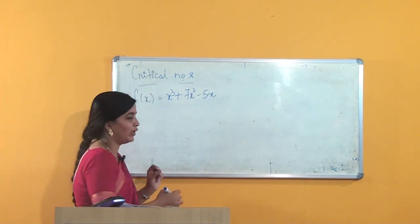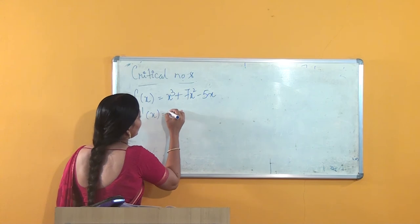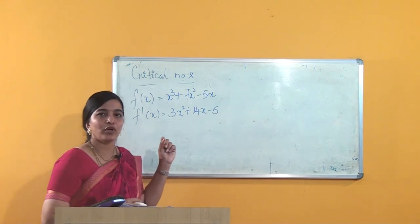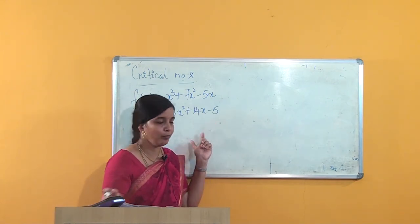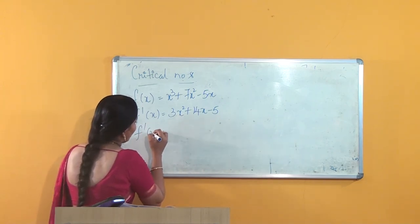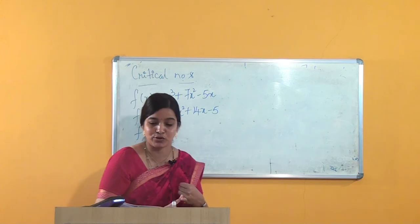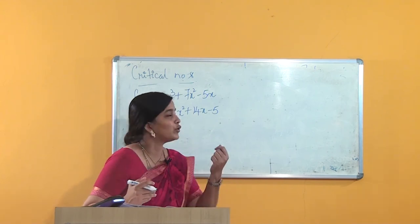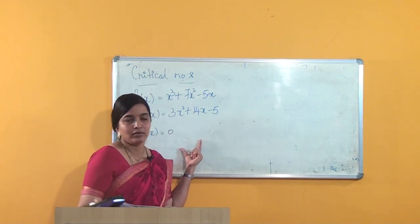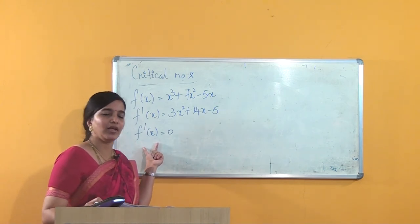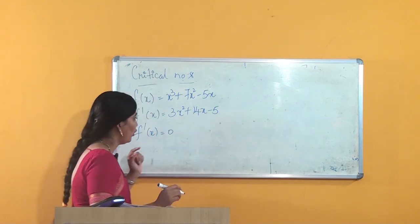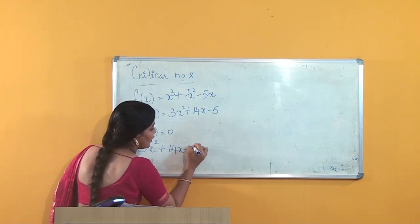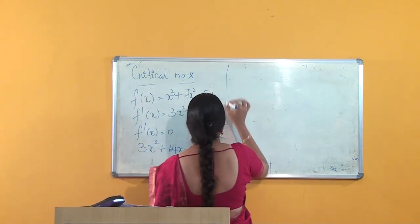We need to find f'(x). f'(x) = 3x² + 14x − 5. We have obtained a quadratic equation. There are two cases: f'(x) = 0 or f'(x) does not exist. Clearly the 'does not exist' condition does not arise here, so we consider only f'(x) = 0, that is 3x² + 14x − 5 = 0.